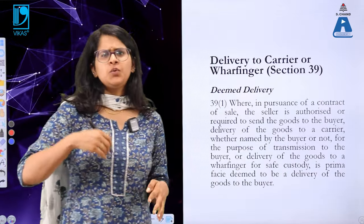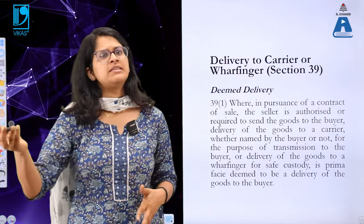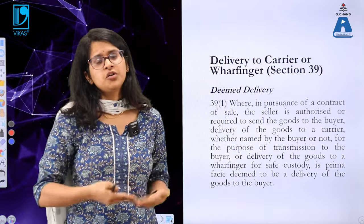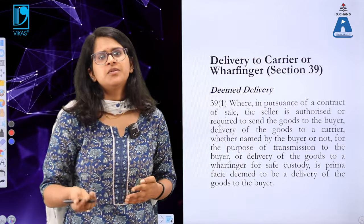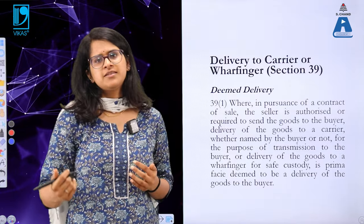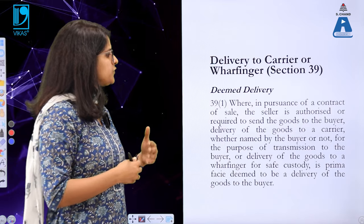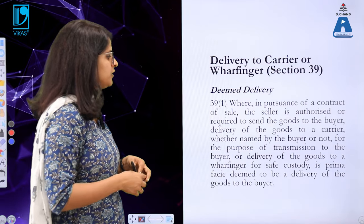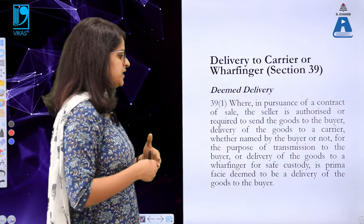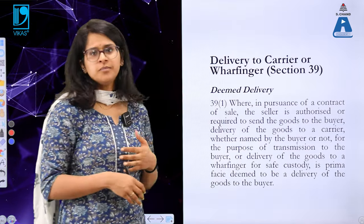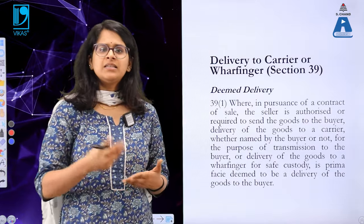It is not always the seller making delivery directly. For example, if you order something from a store in New York while sitting in India, the seller may contact a courier or shipment service — putting the goods in transit and having them reach you. Section 39 states: where pursuant to a contract of sale the seller is authorized or required to send the goods to the buyer, delivery of the goods to a carrier — whether named by the buyer or not — for transmission to the buyer, or delivery to a wharfinger for safe custody, is deemed to be delivery of the goods to the buyer.